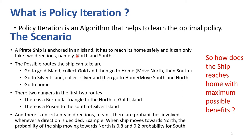We are going to solve a scenario and apply the policy iteration algorithm to find the optimal policy. The scenario is this: a pirate ship is anchored at an island and it can reach home safely. It can only take two directions at each time step — either north or south. There are possible routes given. It can either go to a gold island nearby, collect the gold, and then go home.